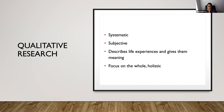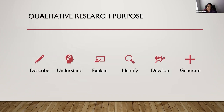It deploys a wide range of interconnected methods, hoping always to get a better fix on the subject matter at hand. The purpose of qualitative research is to describe life experiences and give them meaning. It seeks participants who understand the study and are willing to express their feelings and experiences. It examines the uniqueness of an individual's lived situations, recognizing that each person has their own subjective reality. Qualitative research identifies variables for study, develops and informs theory, and generates the basic element of analysis based on participants' own words.